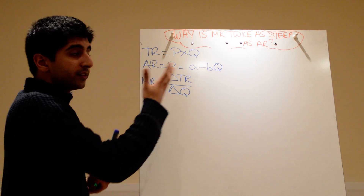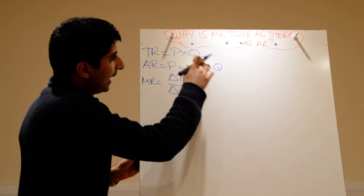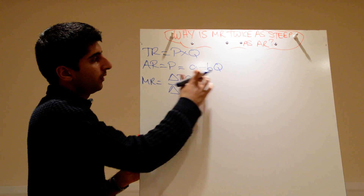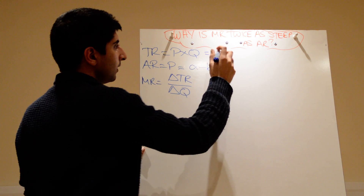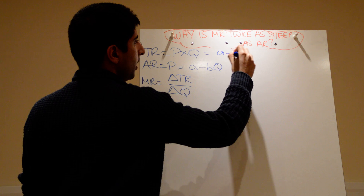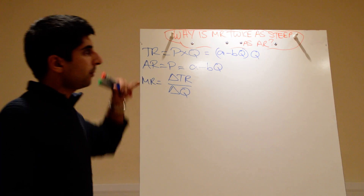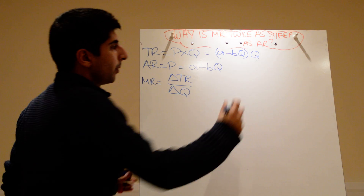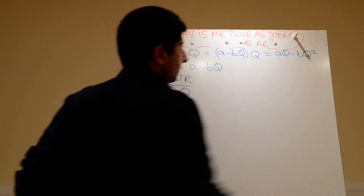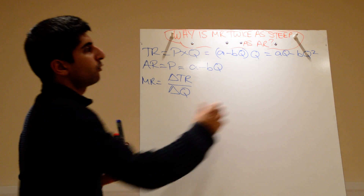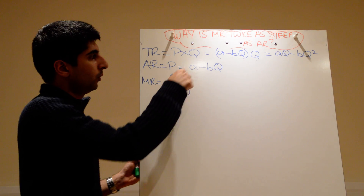Let's use these values to give us an actual equation to work with. Let's sub in our price value — our demand equation — into this value of p. So that's going to give us (a − bq) times q. And we multiply that out, which leaves us with aq minus bq squared. So that's another way of writing total revenue, substituting for p using this demand equation.